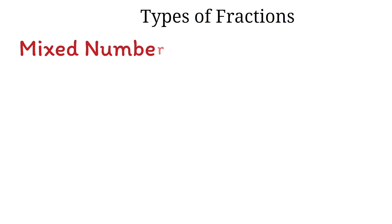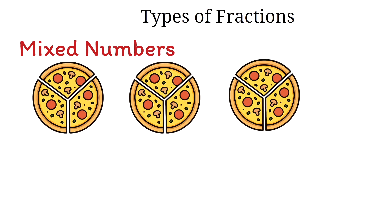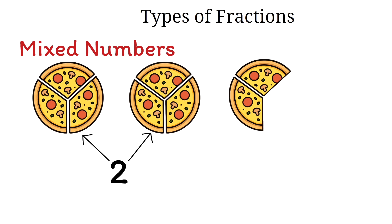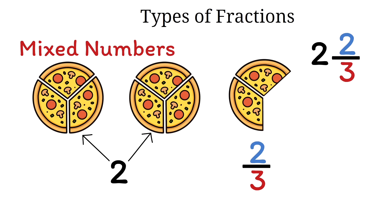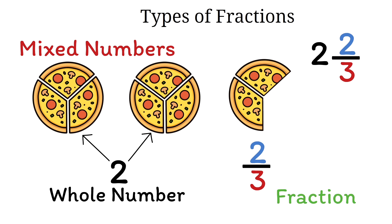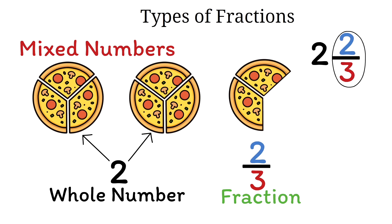Next, let's talk about mixed numbers. Let's say we have 3 whole pizzas, and we take one slice from the third pizza. We will have 2 whole pizzas left and 2 slices out of 3 from the third pizza. So we'll have 2 and 2 thirds of pizza available. This is a mixed number. It is called a mixed number because it is a mix of a whole number and a fraction. In our example, the 2 is the whole number, and the 2 over 3 is the proper fraction.